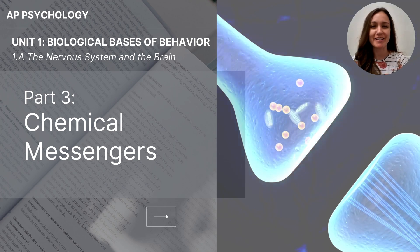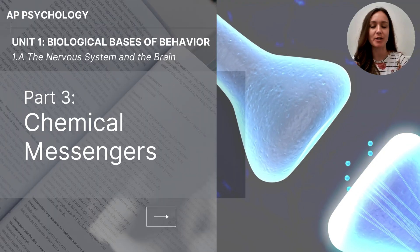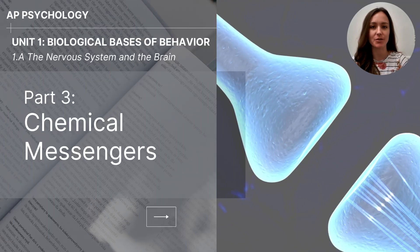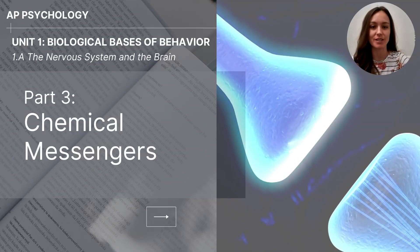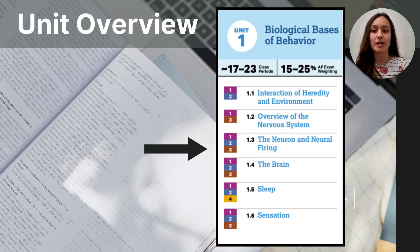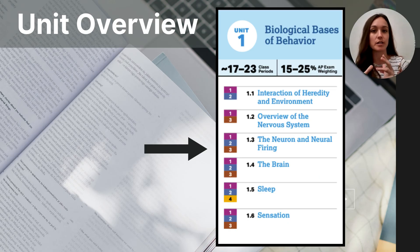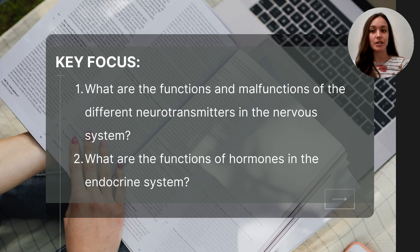Hi everyone, my name is Jolie McCreary and this video is part three of the unit one series biological basis of behavior for AP psychology students. This video will cover chemical messengers and the nervous system. This video will finish up the topic of the neuron and neural firing. In the previous video, part two, you went through an in-depth explanation of the electrical part of the neural transmission process. Today's video will focus specifically on the chemical component.